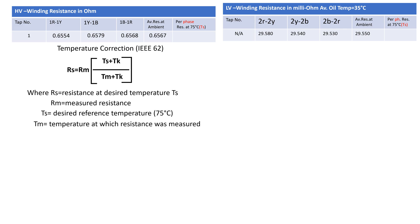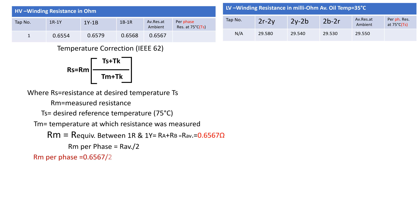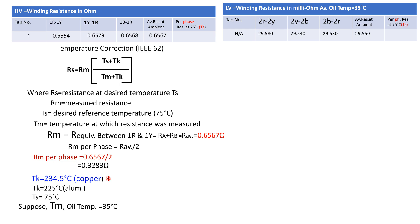The measured value of resistance between 1R and 1Y: RM = RA + RB = R_average = 0.6567 ohms. Then RM per phase = R_average / 2 = 0.3282 ohms. Taking RM = 0.3283 ohms, Tk = 234.5 degree-centigrade, TS = 75 degrees centigrade, TM = 35 degrees centigrade. We get RS, resistance at 75 degrees centigrade, equal to 0.3770 ohms.